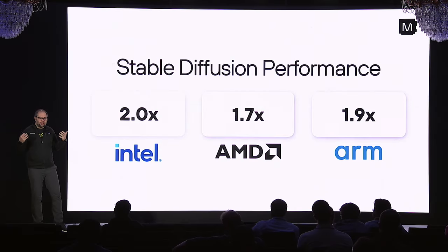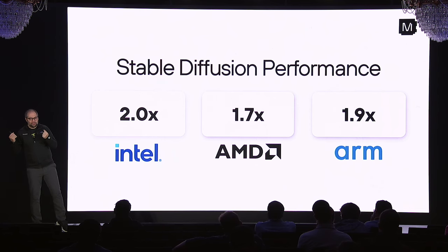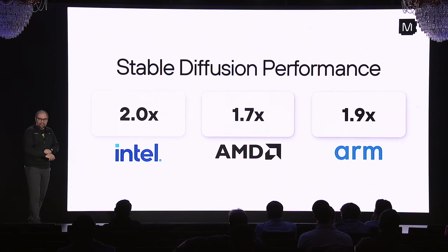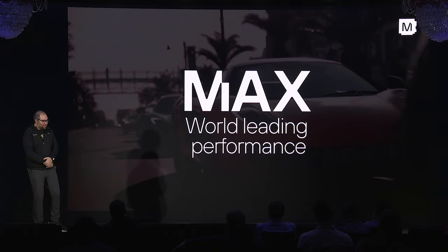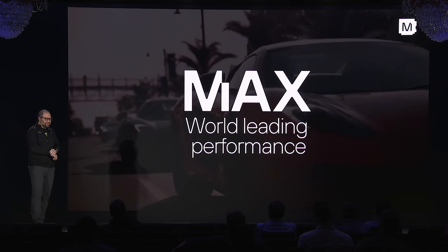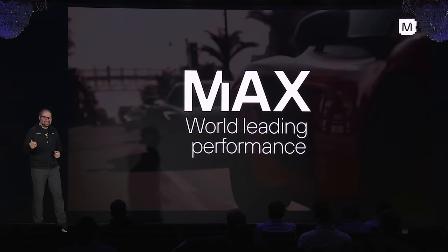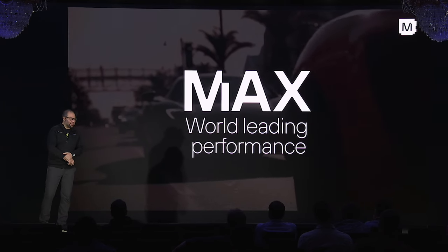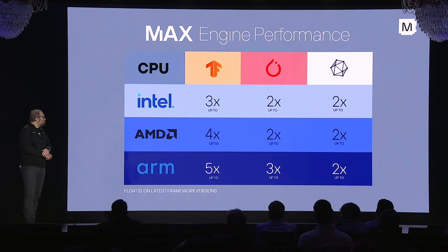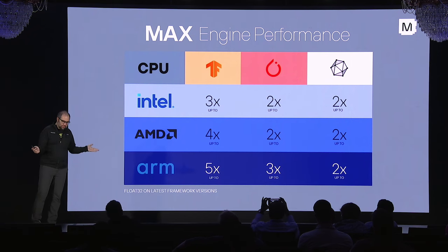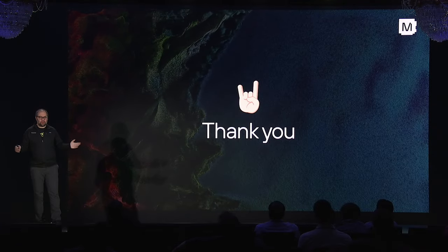We measured performance on the stable diffusion pipeline and we're getting 2x speedup across the board. This is massive — if I tell you that you can spend 50% less money on serving, you'd take that, especially if it's just a drop-in replacement where all you're doing is changing one flag. To summarize, Max is the world-leading inference platform that unifies your entire stack and brings massive compute multipliers across hardware, model types, and data types in all dimensions. With that, I want to open it up for questions. Thank you very much.